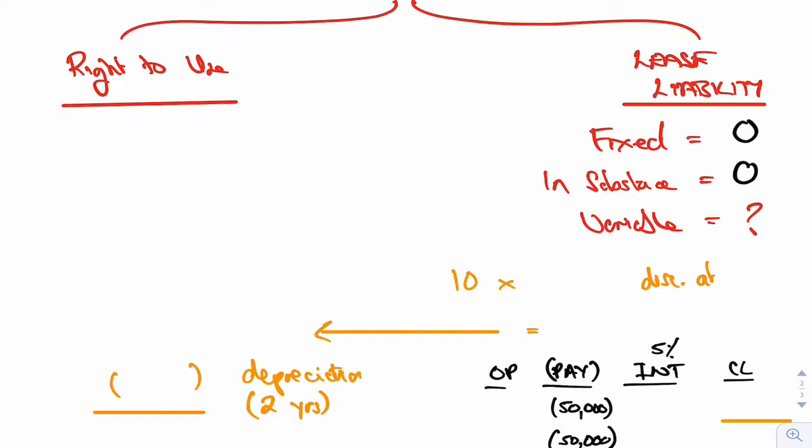So it would have been 10 times 50,000. That was the variable one. We keep it at 50,000. We don't try and guess what's going to happen in the future. We discount it down at 5%, and I can tell you that the answer to that is 405,391. And that's what would therefore be your right-to-use asset.